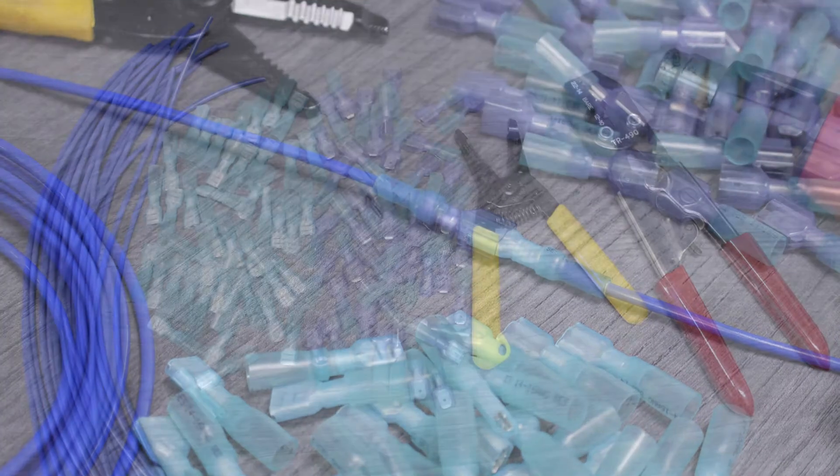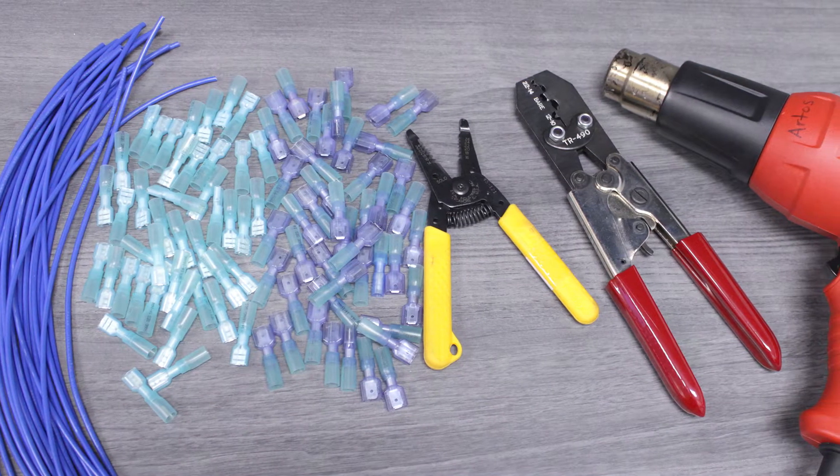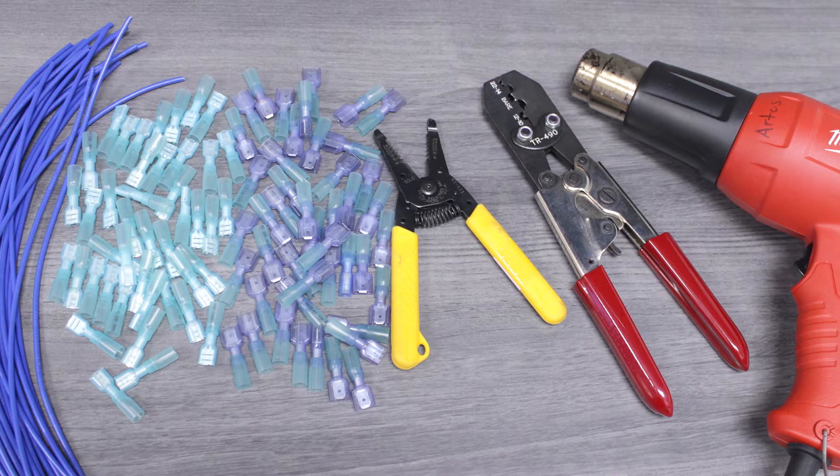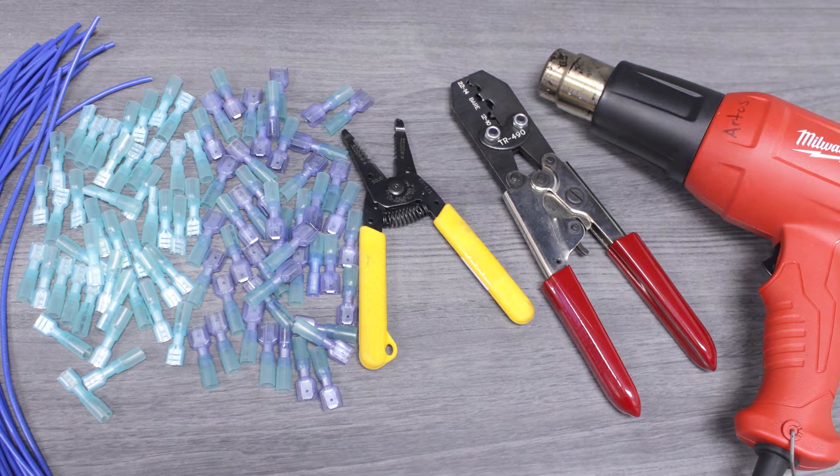We'll start by gathering the materials we'll need. We'll be using 14 gauge wire, heat shrink disconnects, a compact wire stripper, a crimping tool, and a heat tool.